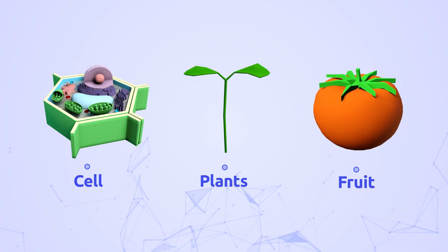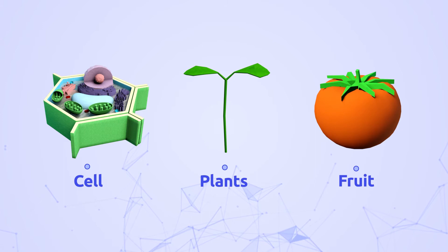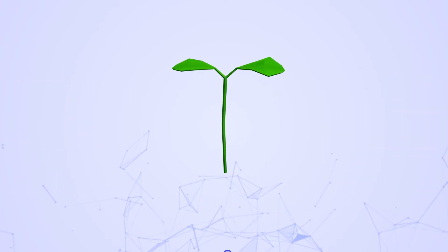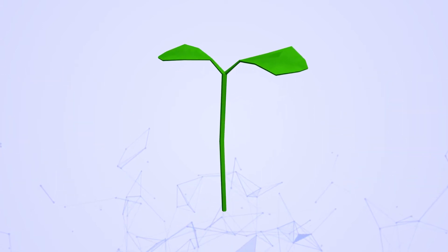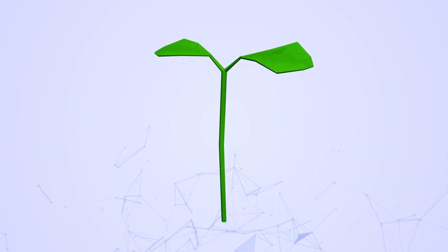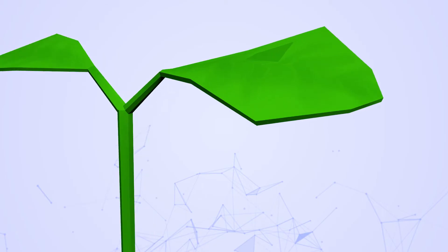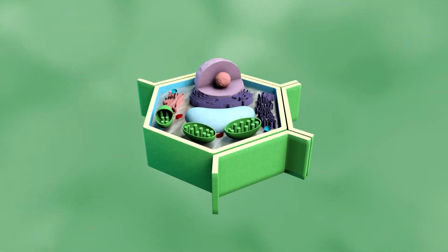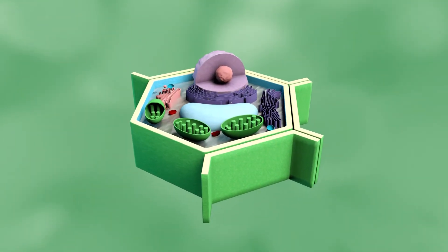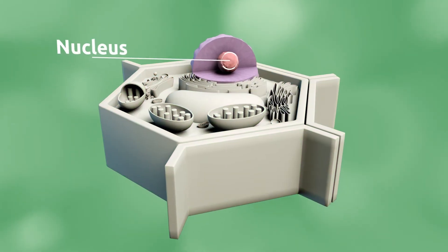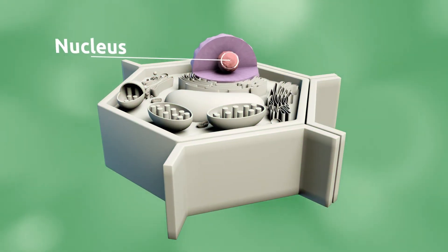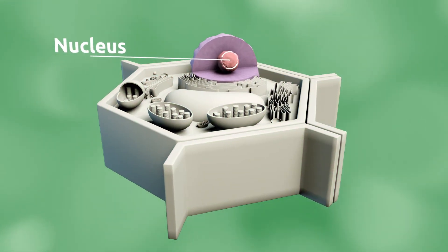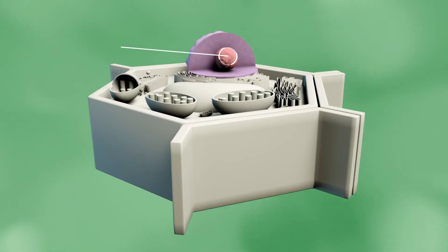Trees, flowers, vegetables, and fruit are made up of plant cells, which are in charge of the growth cycle. More specifically, vegetables make their own food through photosynthesis. A plant cell is a eukaryotic cell, and its nucleus is in charge of all cell functions.